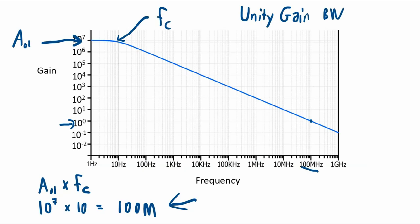So for example, at 10 to the fifth or a hundred thousand, bandwidth is one kilohertz. A hundred thousand times one kilohertz is a hundred megahertz. At gain of a thousand right there, a thousand times a hundred thousand. Again, a hundred megahertz.